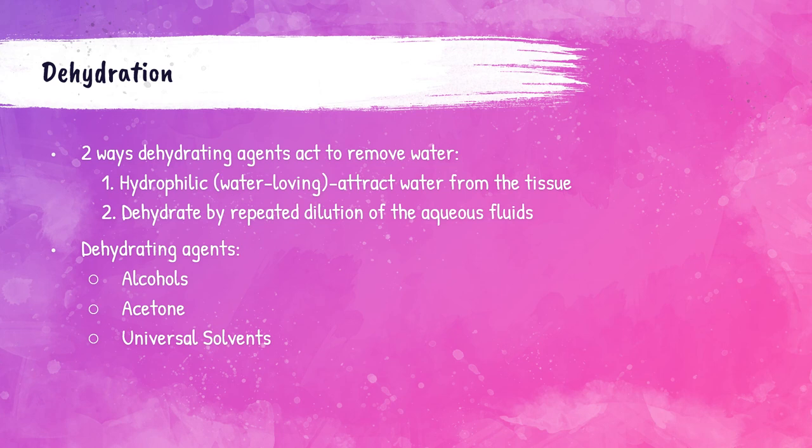Dehydrating agents act in two different ways to remove water from tissue. Some reagents are hydrophilic — they love water and mix or dissolve in it — so when added they attract water out from the tissue. Some dehydrating reagents act by repeated dilution of the aqueous fluid within the tissue. There are three types of dehydrating agents used in the histopathology laboratory: alcohols, acetone, and universal solvents.